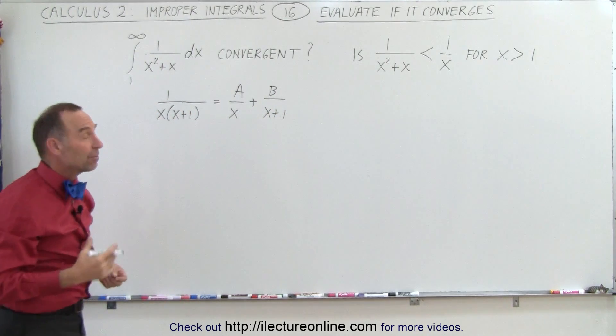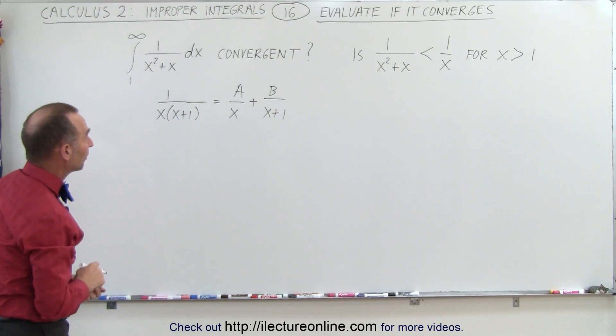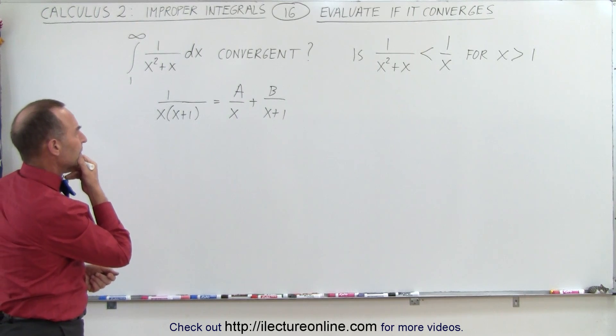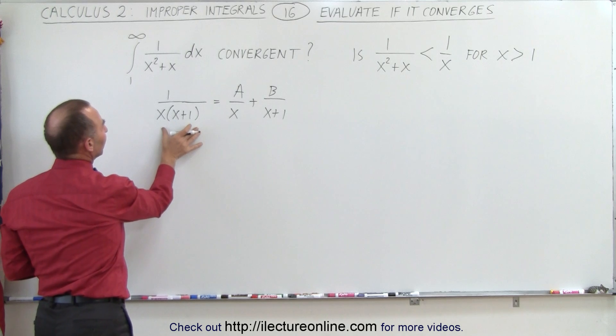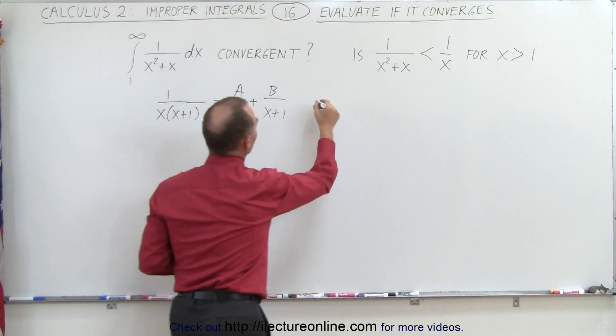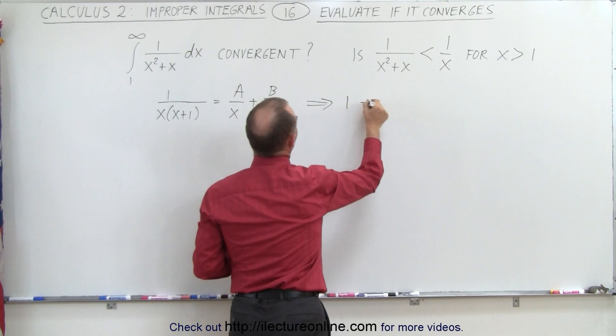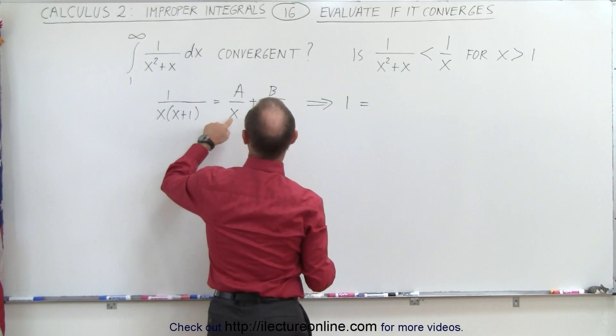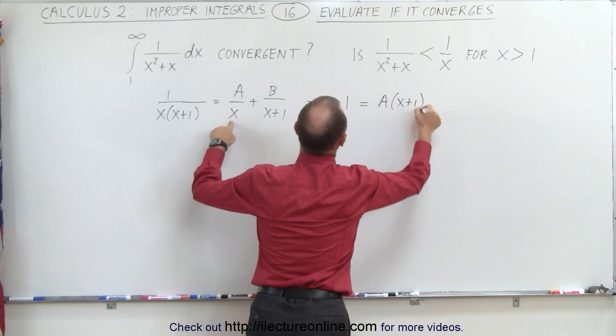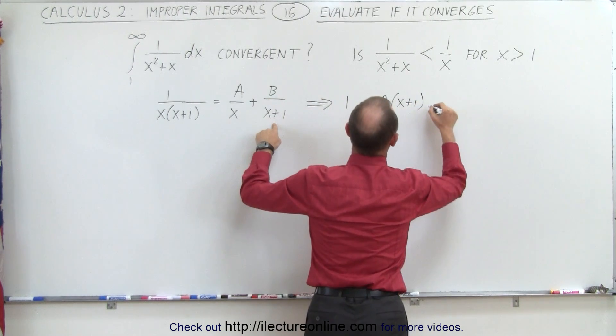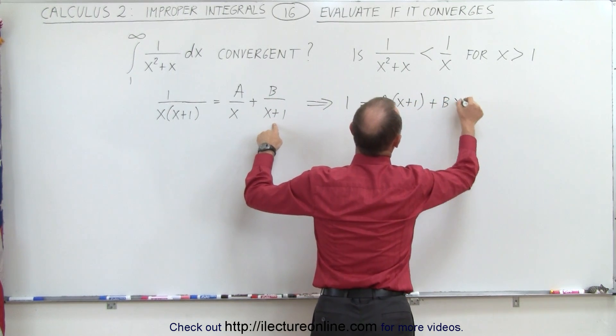All we have to do is find A and B so that we can integrate. We can multiply both sides by the quantity x times x plus 1. When we do, the left side becomes 1. On the right side, when the x cancels out, you have A times x plus 1, and when x plus 1 cancels out, we have plus B times x.